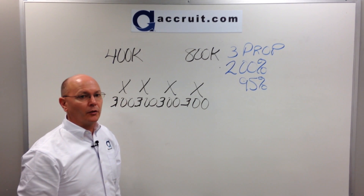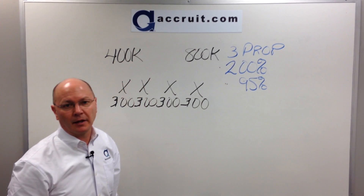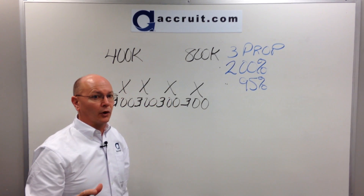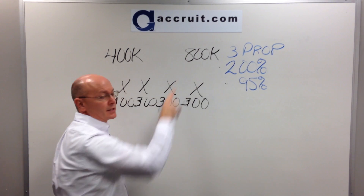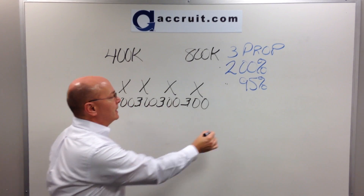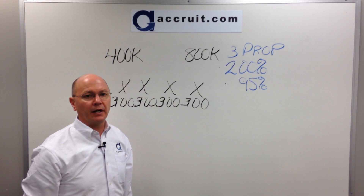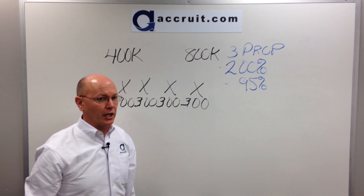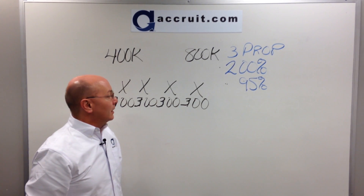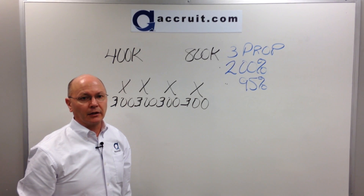So now you have to follow the third and final sub-rule under the identification process, which is referred to as the 95% rule. That states that since you've identified four or more and since you are over the 200% threshold, in order to make the exchange work, you will have to actually purchase 95% or more of the total value of what you identified — or unfortunately, your entire exchange fails. In this case, the taxpayer would have to purchase in all likelihood all four of the properties, or unfortunately the entire exchange fails.